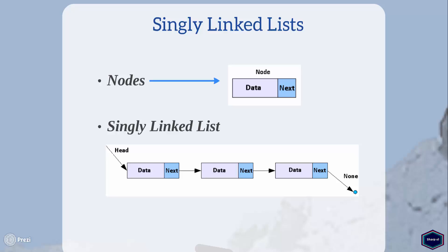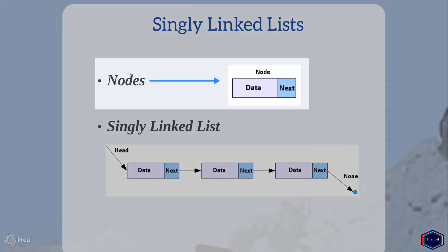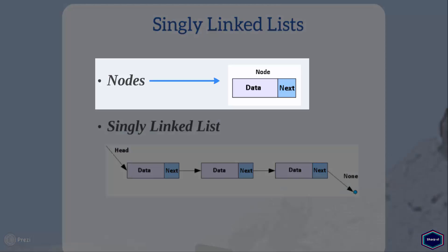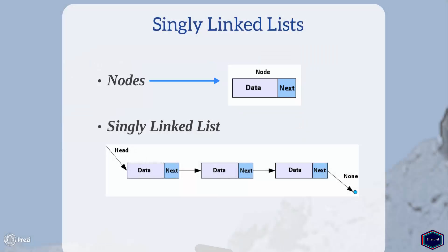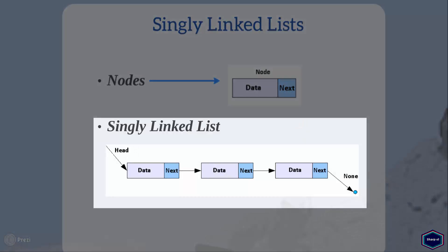The individual elements of a singly linked list are called nodes. Every node contains two fields: data and next. The data field is used to store the actual value of that node, and that can be any built-in or user-defined data type. The next field is used to store the address of the next node in the sequence. Here you can see the conceptual picture of a singly linked list with three nodes. The very first node is also called head, and the last node's next field points to none.